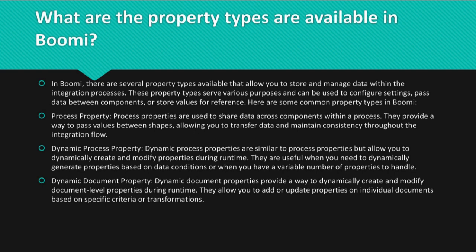Dynamic process property: Dynamic process properties are similar to process properties but allow you to dynamically create and modify properties during runtime. They are useful when you need to dynamically generate properties based on data conditions, or when you have a variable number of properties to handle.